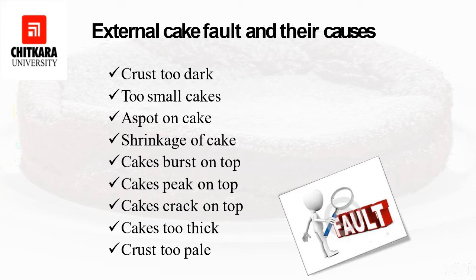Cake peaks on top — a big top on the cake — can result from using too much strong flour, insufficient aeration, or too much heat applied to the top of the cake. Cracks on top also indicate that the batter has been over-worked.